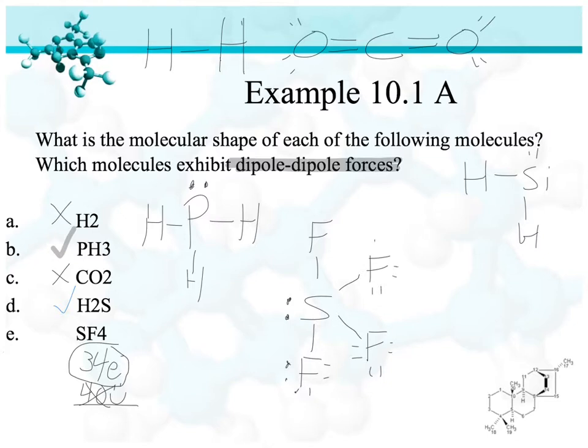And we get this seesaw shape. Trigonal bipyramidal geometry, or electron geometry, but then a seesaw molecular geometry. We have to know these shapes because this is, again, a polar molecule. So it will exhibit dipole-dipole forces, polar versus nonpolar. The molecules themselves can be polar or nonpolar, but when you get two molecules together, they have intermolecular forces between them.